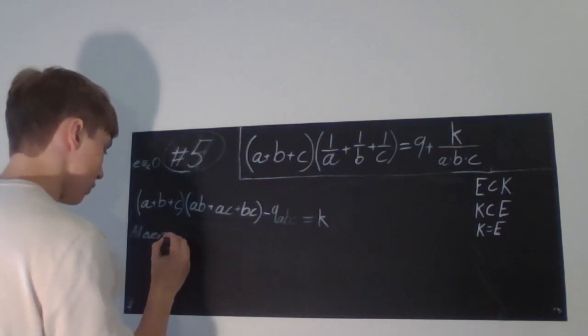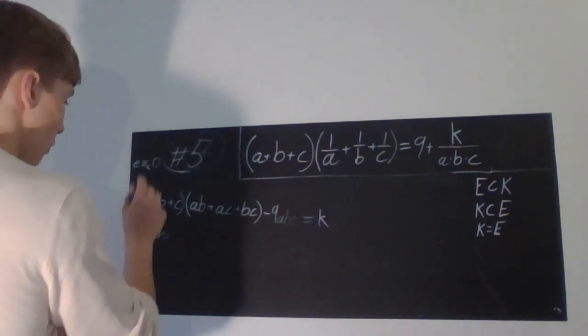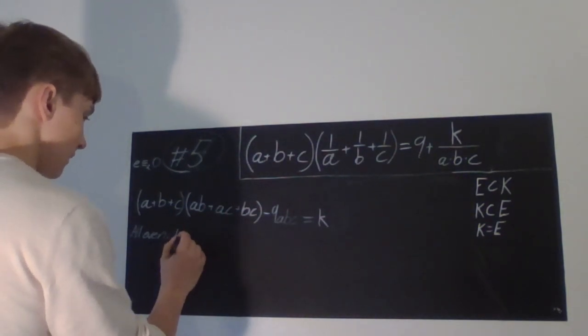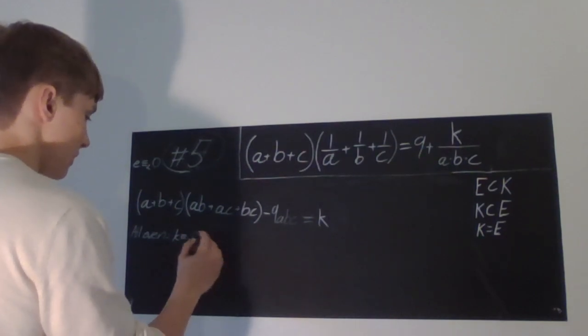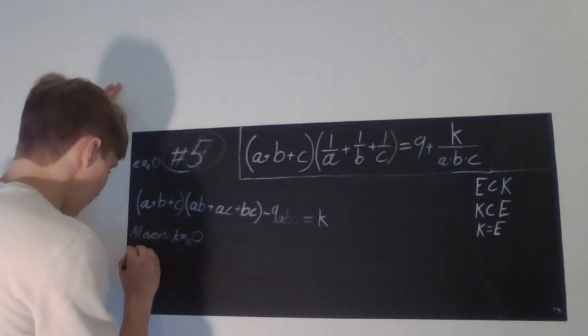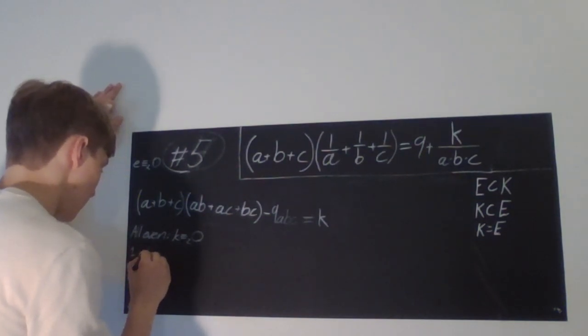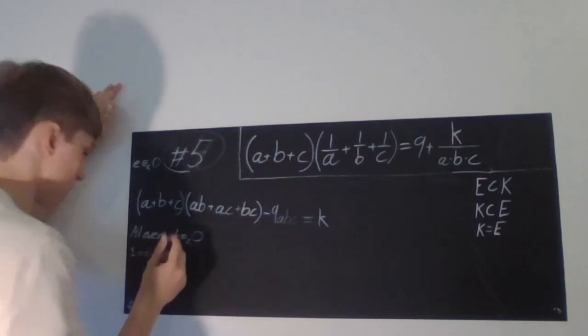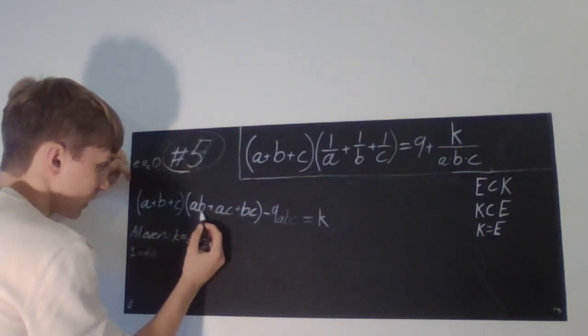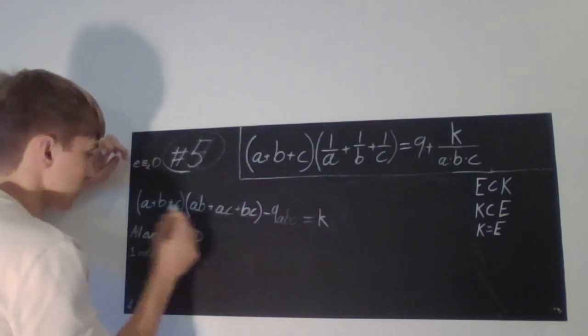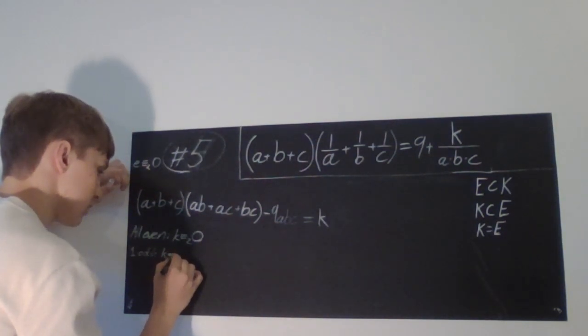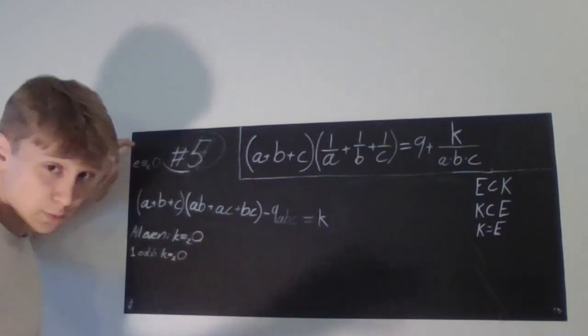If they're even, then we just get zero plus zero plus zero, everything. Then we just get k modulus two is zero, which is even. So this doesn't violate. And we'll check if we have one odd number and the rest are even. What do we get then? We get one times one times zero, zero times zero. So we still get k modulus two is also equal to zero. Therefore k is even.